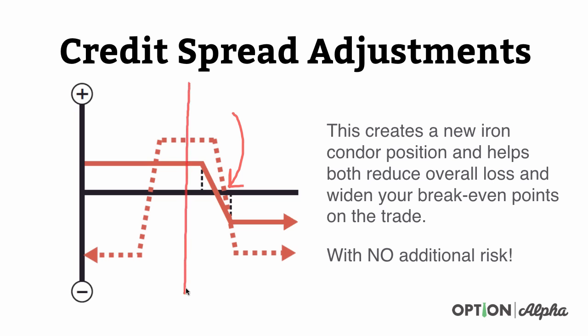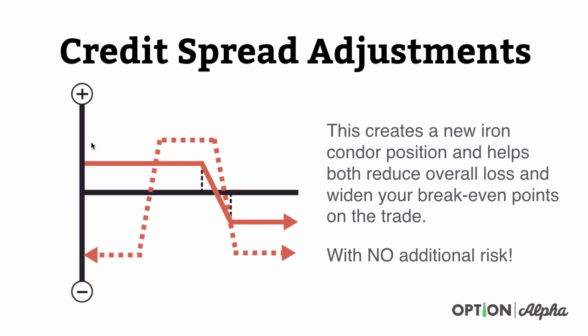Another great thing about creating this new iron condor is that it's going to help widen your breakeven points by the amount of the credit that you received, and it will recenter the trade over where the stock is. So if the stock is now trading at say 55, you can see our new iron condor — in the dotted line — is kind of right centered around where the stock is trading. Originally the stock might have been trading around 50. Now the stock has rallied higher, and this new iron condor is a little bit taller, a little more narrow, and more centered around where the stock is trading.